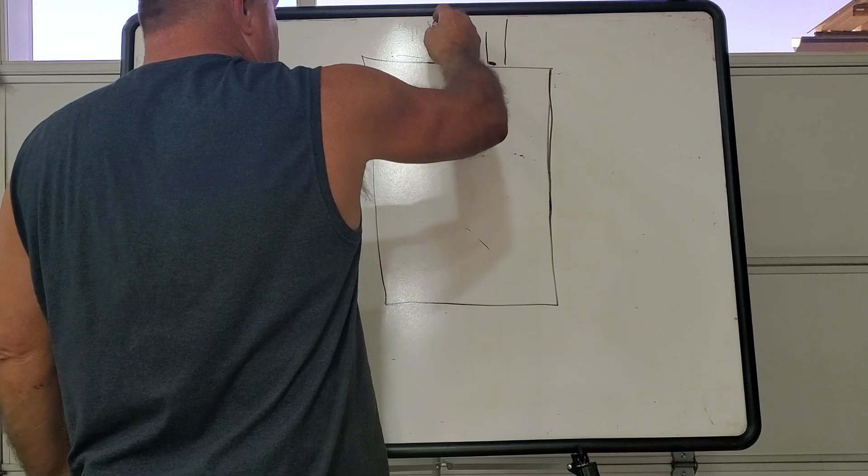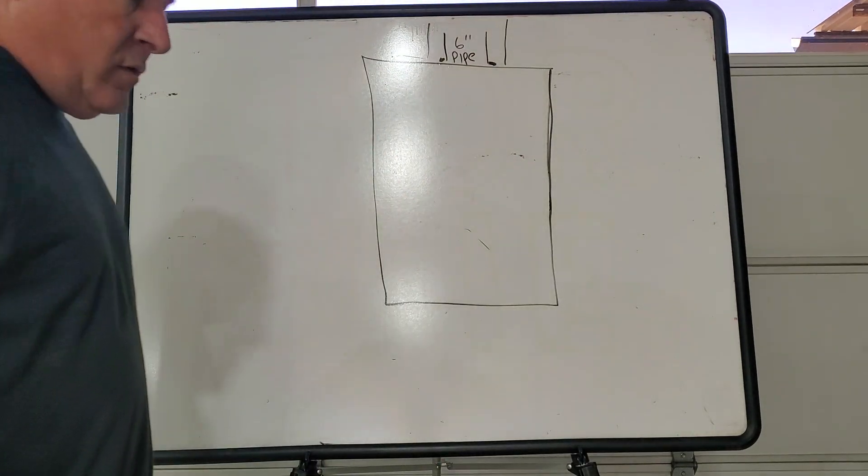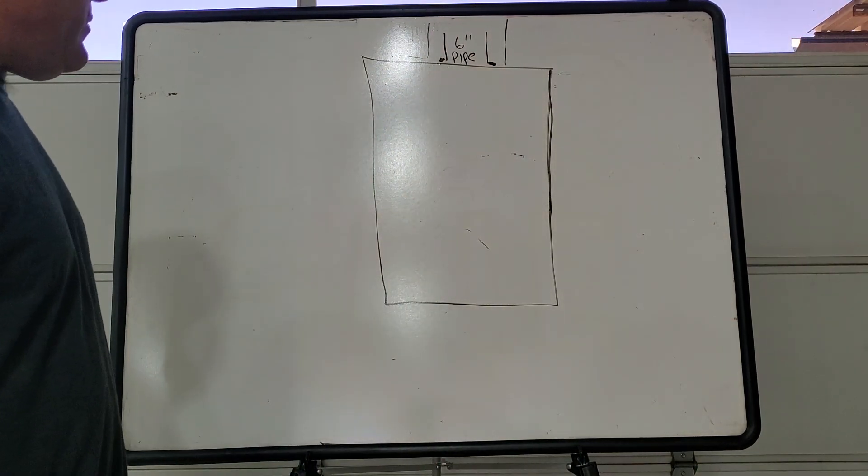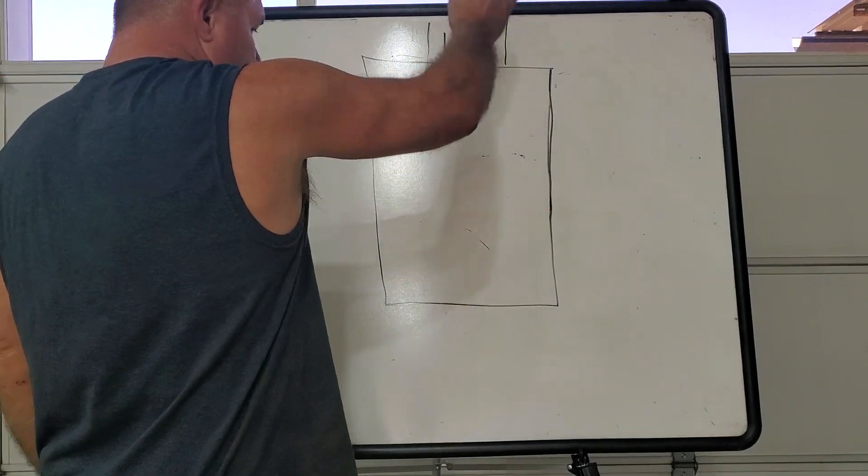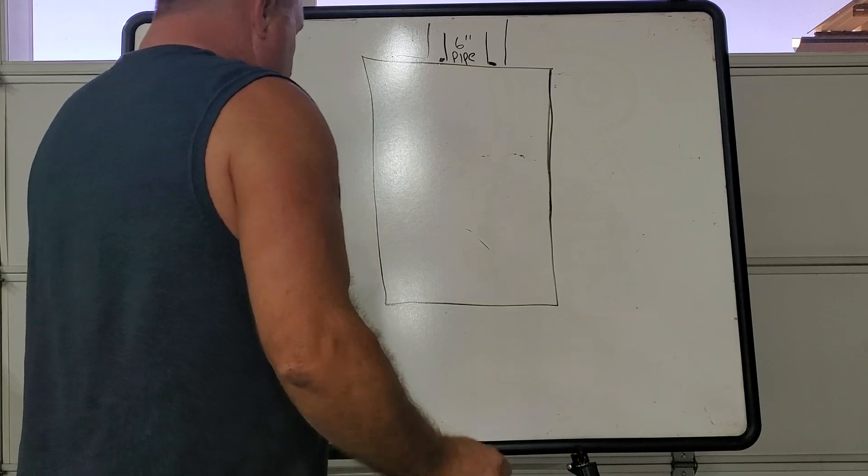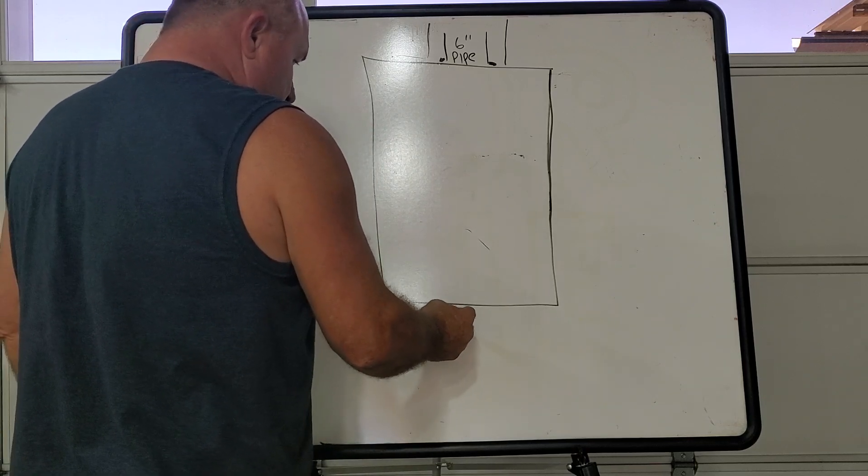And then I run an eight-inch steel exhaust tube out of the building over that. You don't have to worry about sealing this off because it draws air when it goes up.